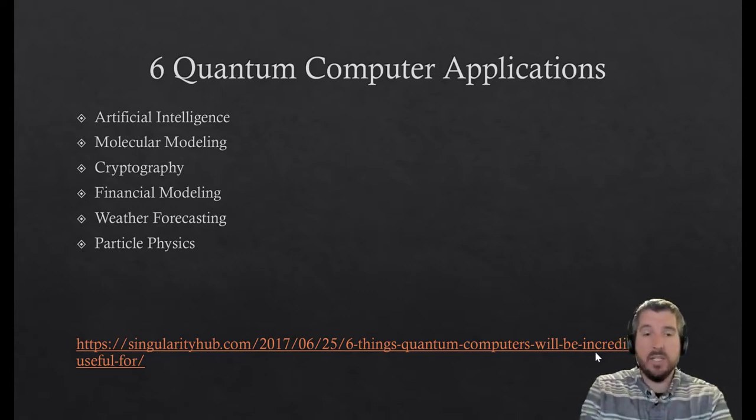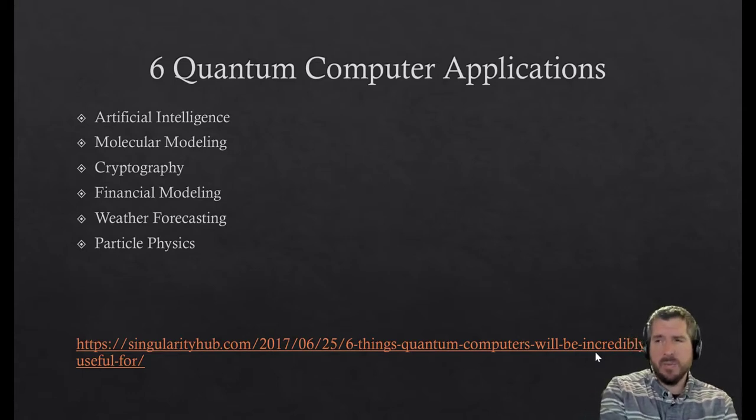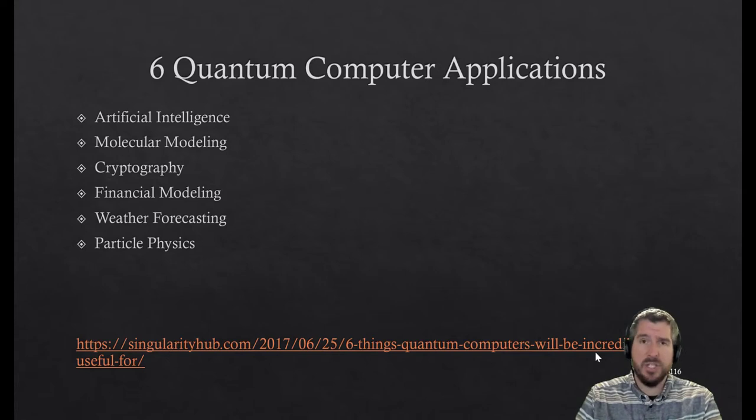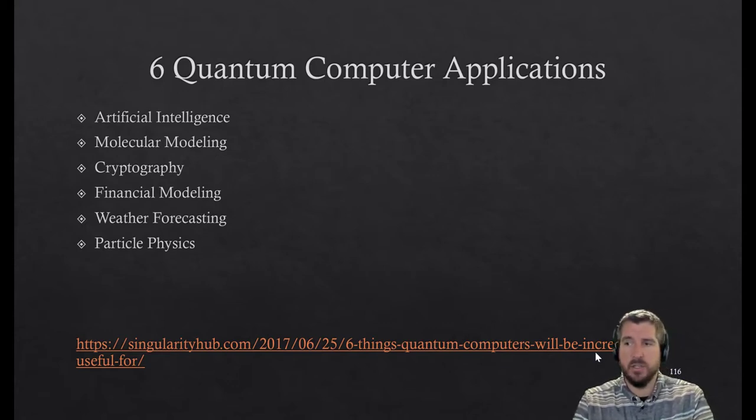In fact, recently Google said that they had reached quantum supremacy with one of their supercomputers, and it's still debatable in the community about whether that's true. But they say that they can basically do calculations that no regular computer could do faster.